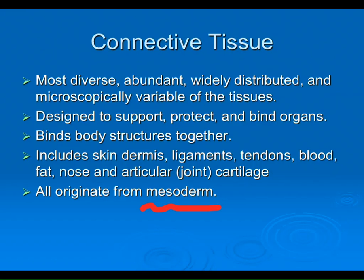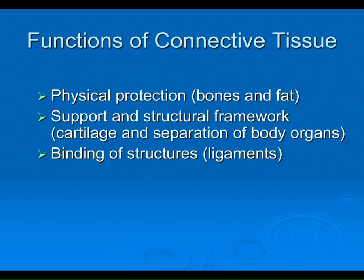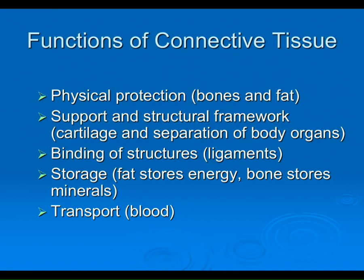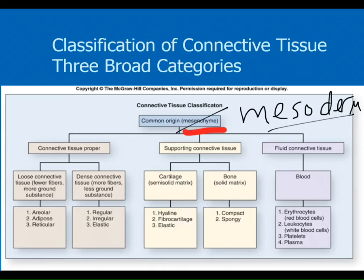What makes these tissues a family? All connective tissues have a common origin. They come in three broad categories: fluid connective tissue — that's blood; supporting connective tissues — bone and cartilage; and connective tissue proper — loose and dense. Under loose we looked at areolar and adipose. Under dense we looked at regular. We did not look at irregular or elastic. I'm only asking you to know the same six connective tissues already focused on in lab.